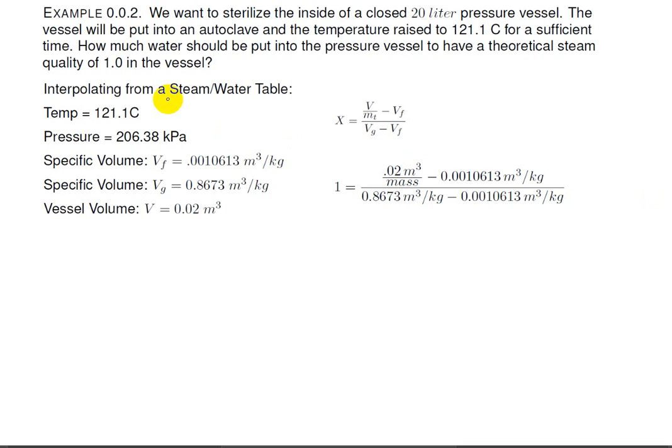Of course, we don't find 121, so we have to interpolate. In this case, I interpolated using a table that went from 120 to 130. Probably not as accurate as if you could use a table that went from 121 to 122. I'm not sure that it matters that much. Anyway, I found a pressure of 206.38 kilopascals. I got a specific volume for the fluid, and I got a specific volume for the gas. I also had to convert my 20 liter pressure vessel into cubic meters, and I get 0.02 cubic meters.